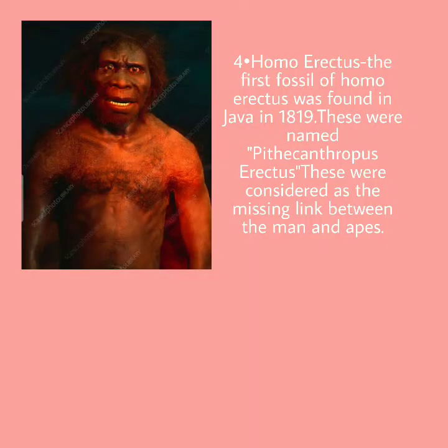Fourth is Homo erectus. The first fossils of Homo erectus were found in Java in 1891. These were named Pithecanthropus erectus. They were considered the missing link between man and apes.